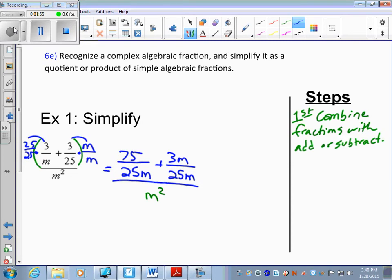Right now, we have like denominators in the numerator. So we just combine 75 plus 3m, not like terms, so we just write 75 plus 3m over 25m, divided by m squared.